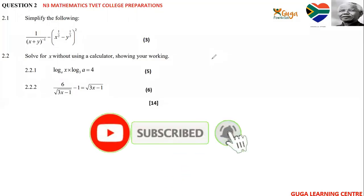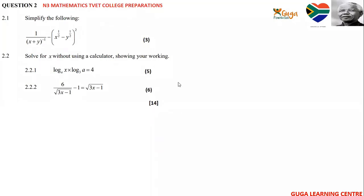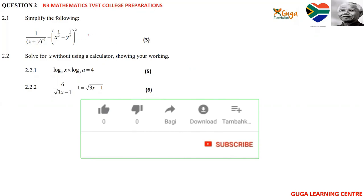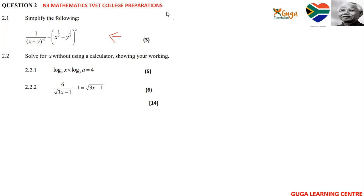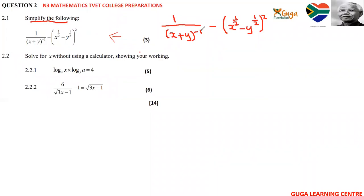Welcome back to entering mathematics college exam preparations. Today we'll be doing question two: simplify the following expression. Here you can see the expression you want to simplify. You have got a negative exponent, so you have to write the expression as a positive exponent.